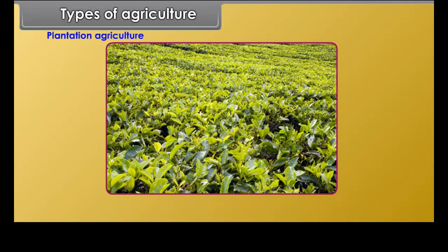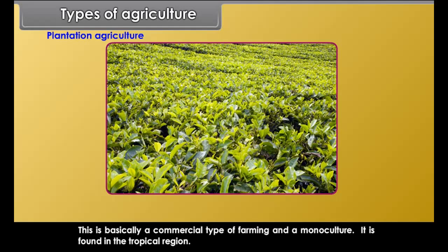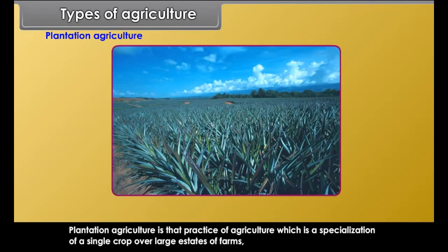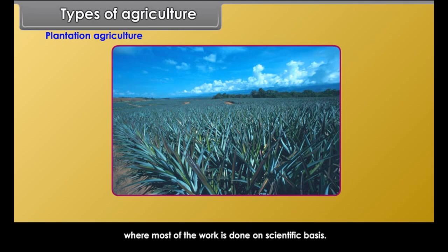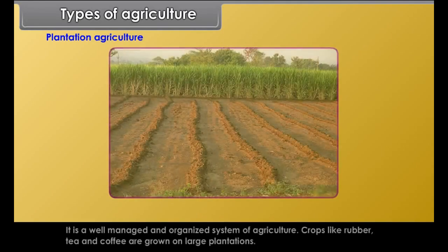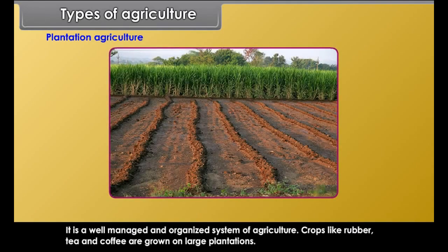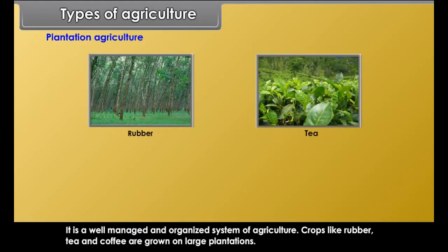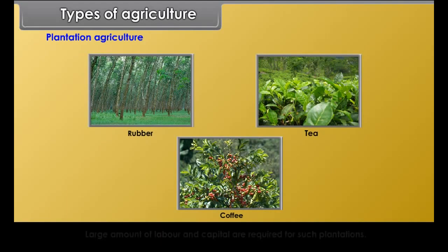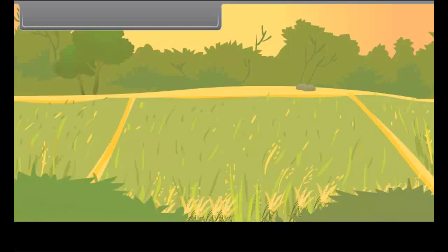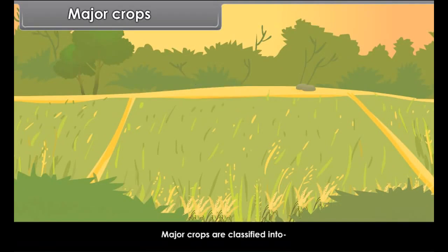Plantation agriculture is basically a commercial type of farming and a monoculture, found in the tropical region. It is a specialization of a single crop over large estates or farms where most of the work is done on a scientific basis. It is a well-managed and organized system. Crops like rubber, tea and coffee are grown on large plantations, requiring large amounts of labor and capital. Major crops are classified into food crops, commercial crops and beverage crops.